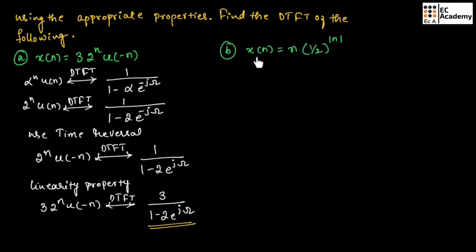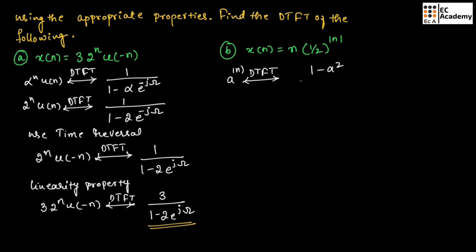Now let us consider the second problem, where x(n) is given as n into (1/2) whole to the power of magnitude of n. From our previous discussion, we know that for A to the power of magnitude of n, if we perform DTFT, we will obtain 1 minus a squared divided by 1 minus 2a cos omega plus a squared.